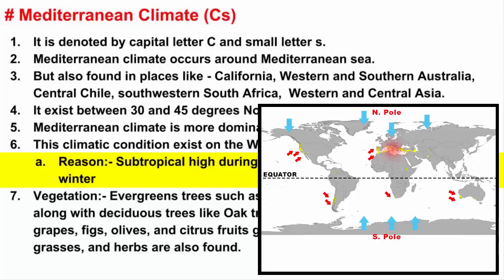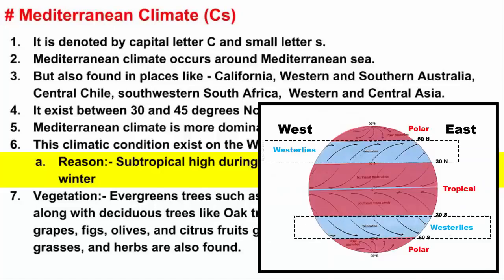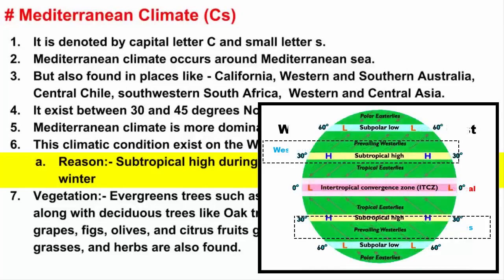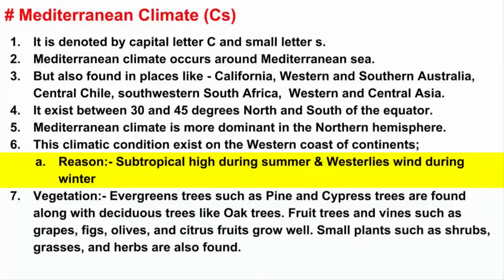During summer, the Mediterranean region is dry because of the cold ocean currents that bring dry air. Looking at the world map, all landmasses with Mediterranean climate have ocean or Mediterranean Sea on their western and southern coasts. So that explains how the subtropical high influences Mediterranean climate. During winter, Mediterranean climate exists due to westerly winds — strong winds found in the middle latitudes, generally blowing between 30 and 60 degrees latitude in both hemispheres, moving from west to east.